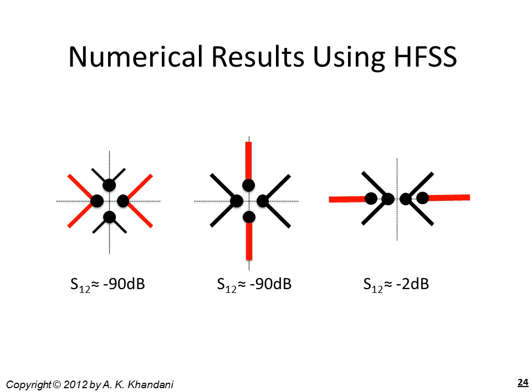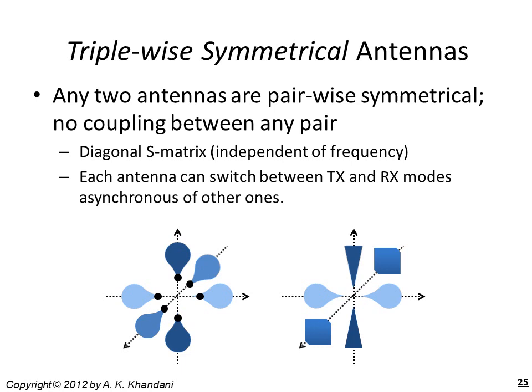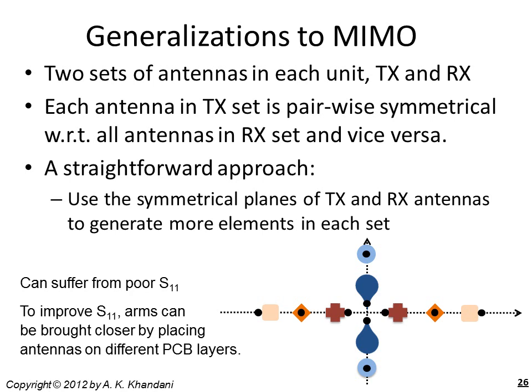This also shows the strength of the field at small distances. Similarly, we can have triplewise symmetrical antennas resulting in a diagonal matrix, where any two antennas are pairwise symmetrical and can establish a two-way link. To generalize to MIMO, we need two sets of antennas—one to transmit and one to receive—with small coupling between every antenna in the transmit set and every antenna in the receive set. The straightforward approach of using the same planes of symmetry to produce more antennas results in poor radiation efficiency because the antenna arms will be far apart, so a different approach is needed.